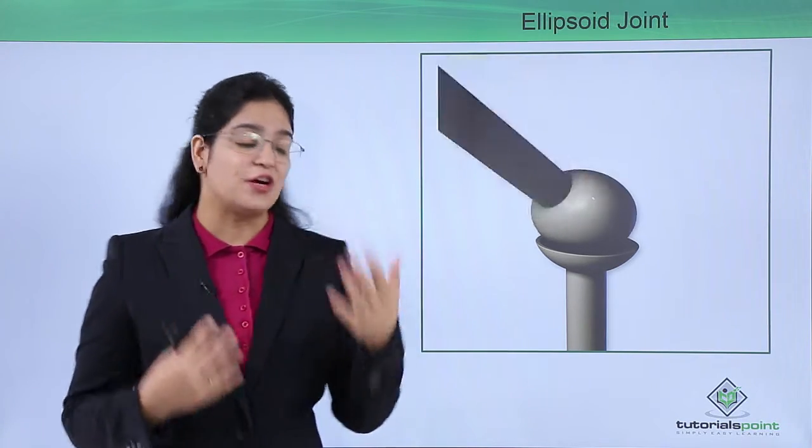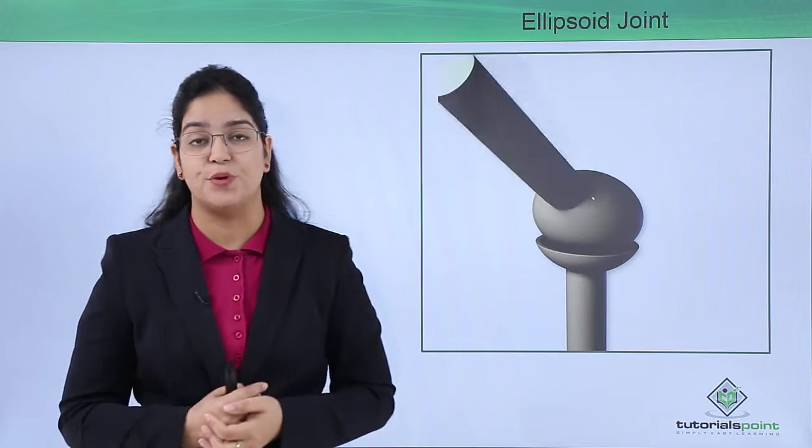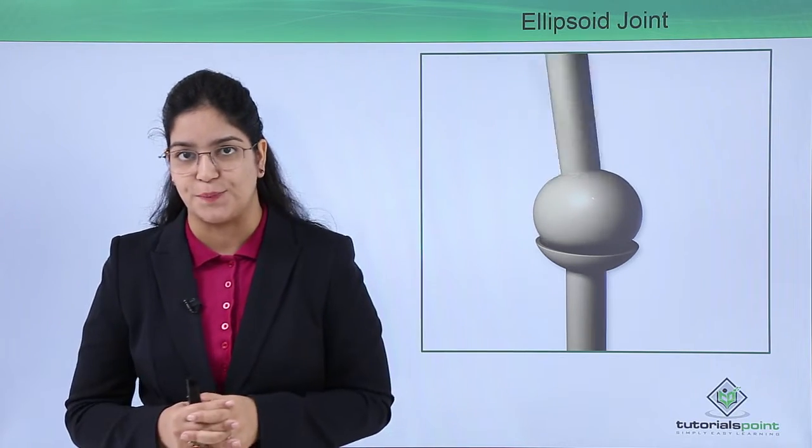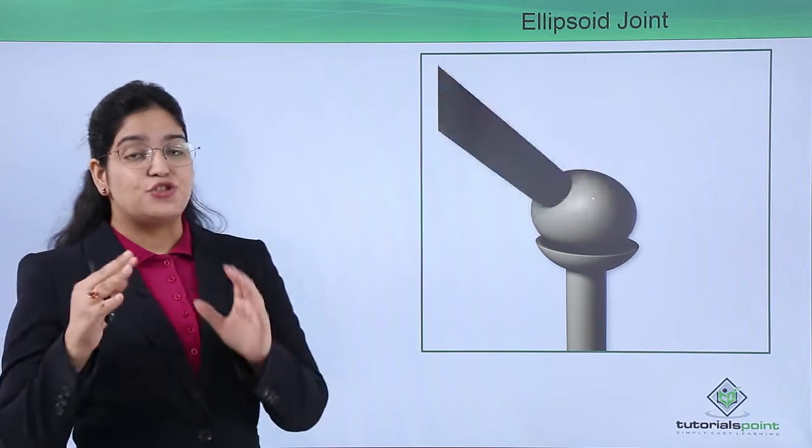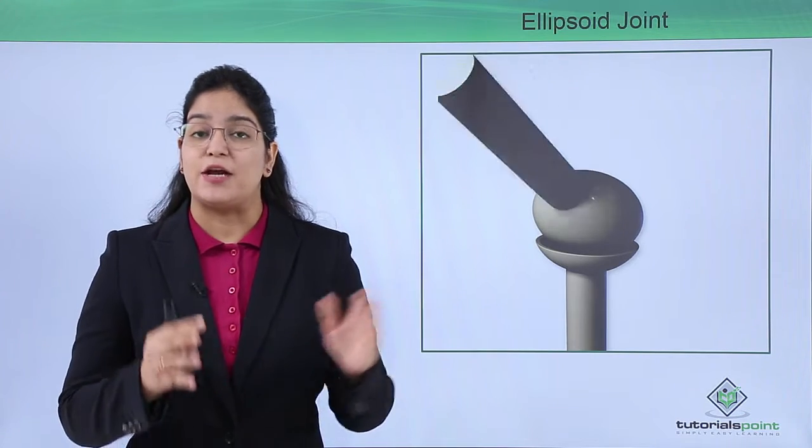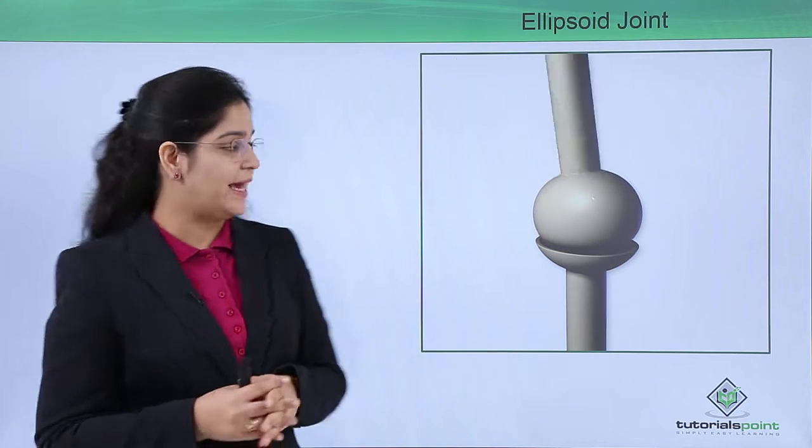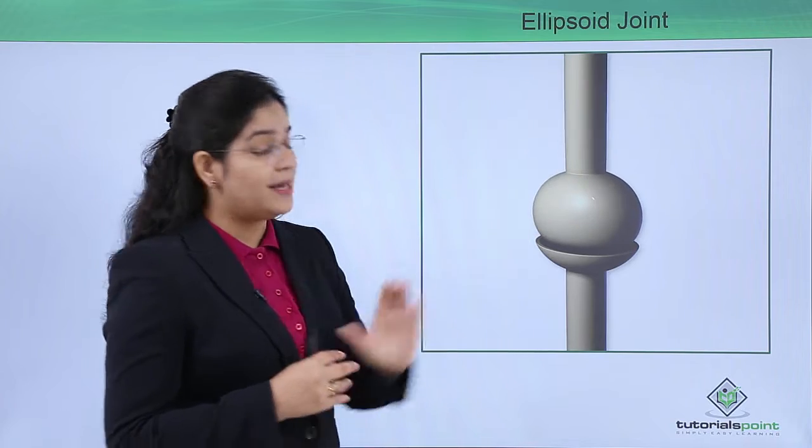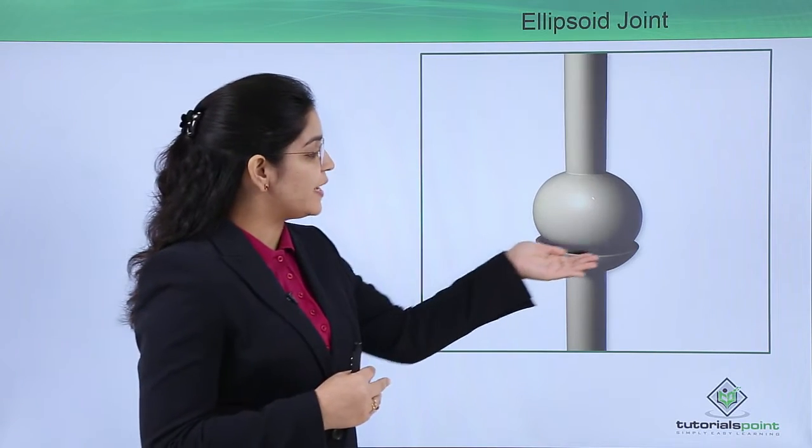before learning about the function of this ellipsoid joint, let's learn why it is called so. This joint is also called the condyle joint. Here you can see a condyle, a ball-like object, is moving in